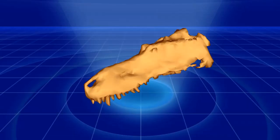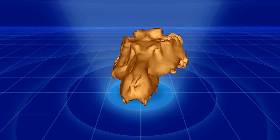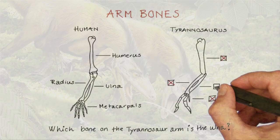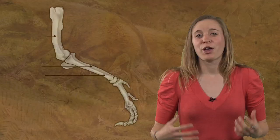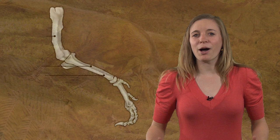When you move on from this video you'll have your first experience with your very own 3D fossil viewer. Good work! The same arm bones are present in both humans and Tyrannosaurus. We humans have the same bones in our legs as well.